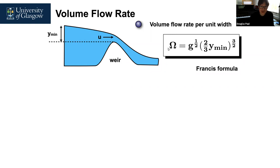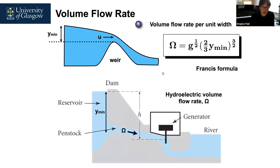To find the energy available we need to know the volume flow rate. Francis first came up with a formula: omega, the volume flow rate per unit width of the weir, equals the square root of gravitational acceleration (9.81 m/s²) times two-thirds times y-min — the head of water above the top of the weir — all raised to the power three over two.